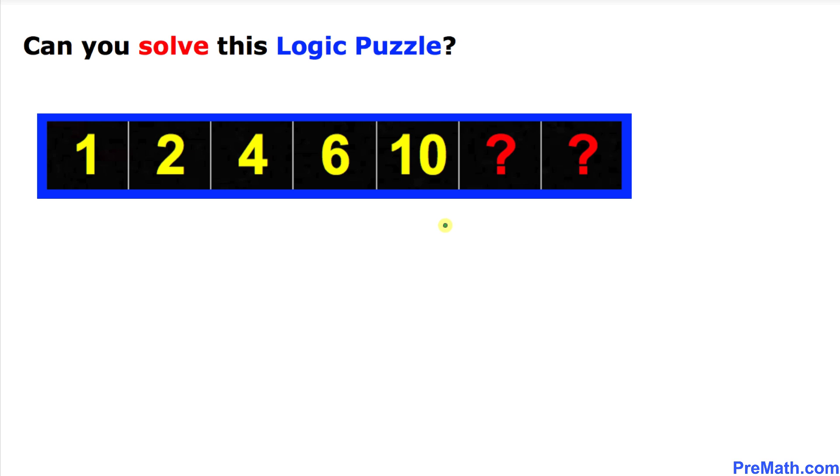Welcome to PreMath. In this video tutorial we have got this Eureka logic puzzle and in this number series puzzle we got these numbers 1, 2, 4, 6 and 10. Now the question mark is what numbers are supposed to be at these two missing places.